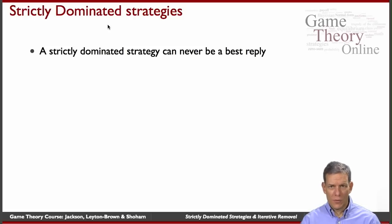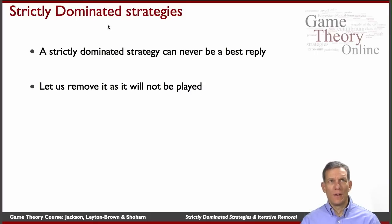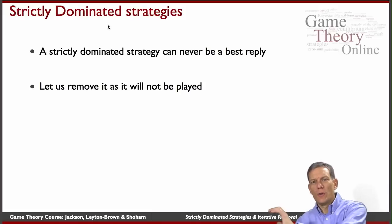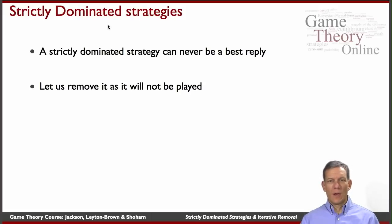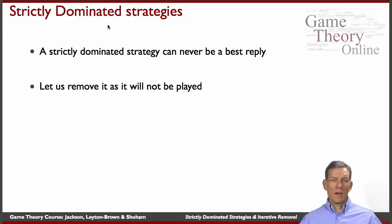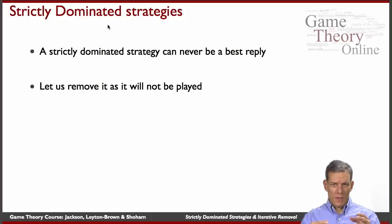A strictly dominated strategy can never be a best reply. If there's something which always does better against any strategy of the other players, then basically it's never going to be played. This is essentially a strategy we can safely ignore if we think players are rational — they should never play a strictly dominated strategy. So we remove those from the game. The idea of iteration is we take those out, now we've got a simpler game. There might be something now strictly dominated in this reduced game, and we take those out, getting an even further reduced game. We just keep iterating on that.